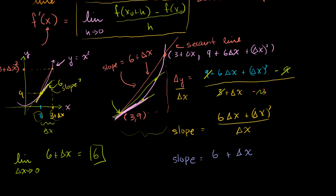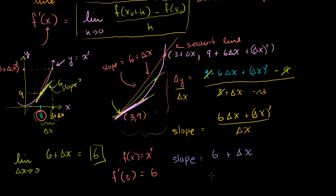Another way to write this: if f(x) = x², we now know that the derivative — the slope of the tangent line — evaluated at x = 3 is equal to 6. I've only evaluated it at the point x = 3 here. I haven't yet come up with a general formula for the slope at any point, and I'm going to do that in the next video.